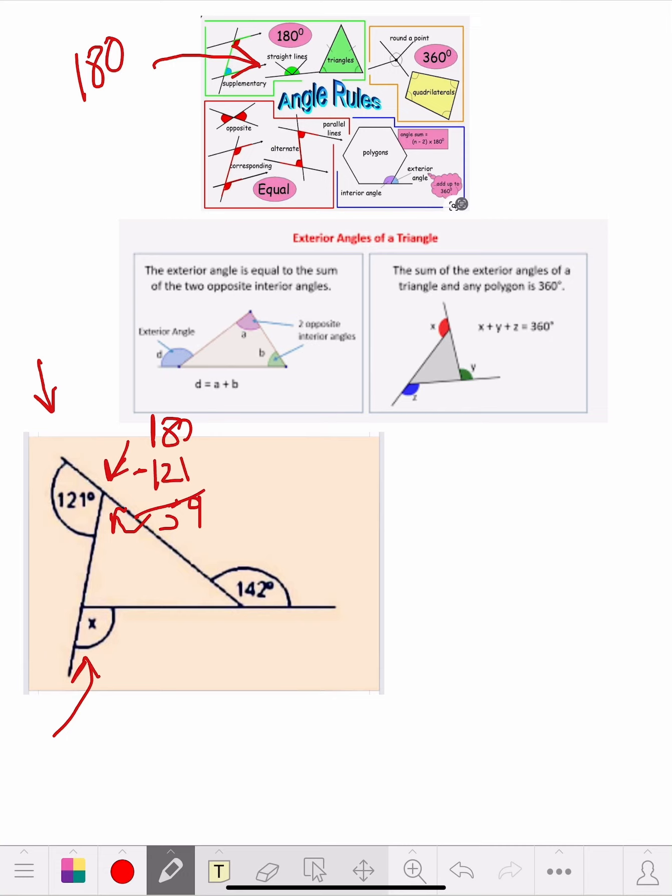Now we've got 142 here. So we could do 180 minus 142, right? And we'll come up with 38. That means this angle in here is 38 degrees.